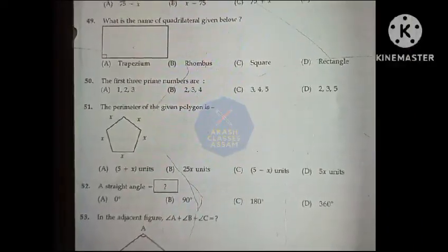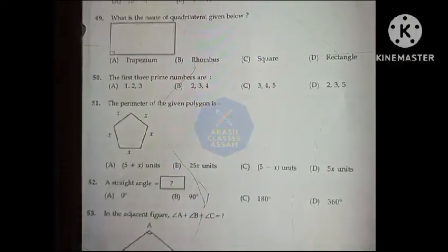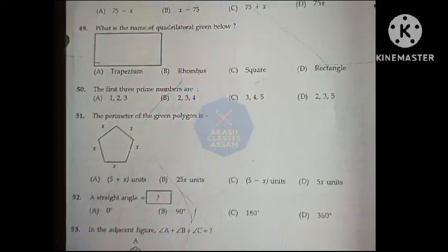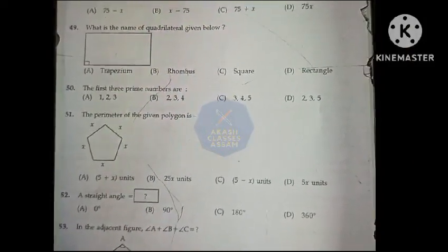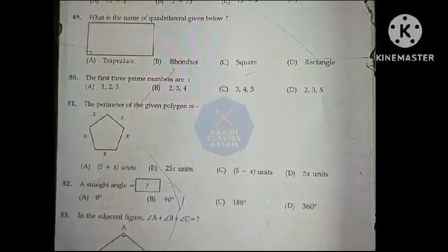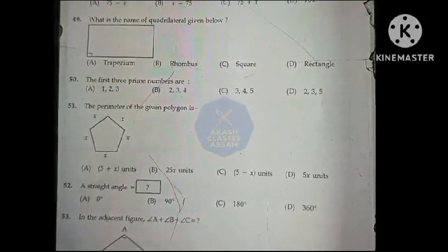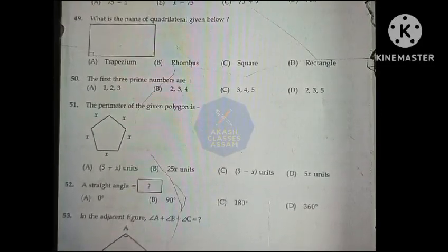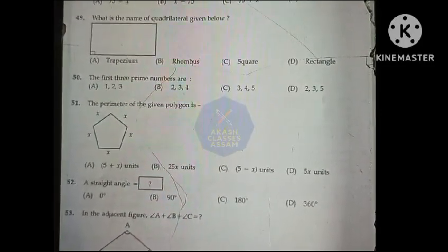What is the name of the quadrilateral given below? Option D, rectangle. The first three prime numbers are: Option D, 2, 3 and 5.